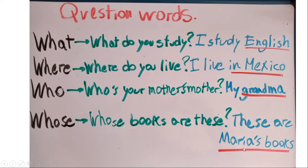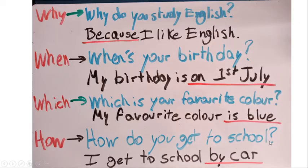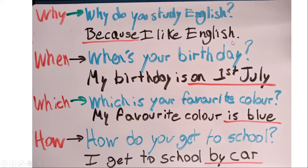Now we have the next four question words: why, when, which, and how. The first is 'why.' 'Why' is basically used to talk about reasons or purposes. For example: 'Why do you study English?' — Because I like English. 'Because' gives us a reason or explanation — it is a reason.